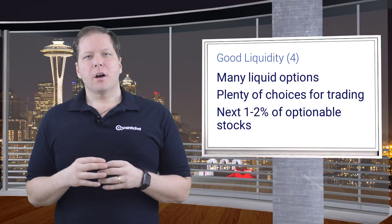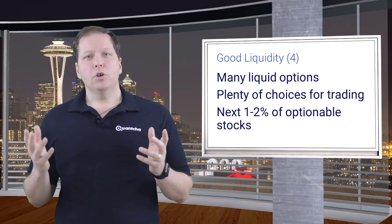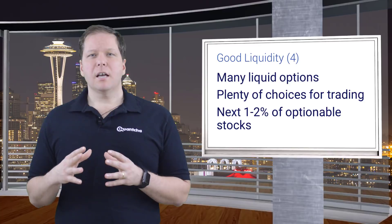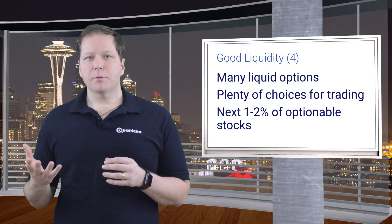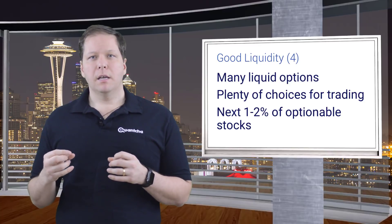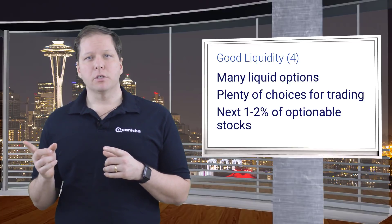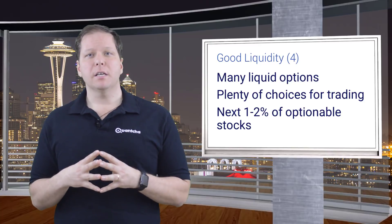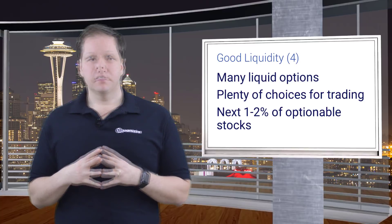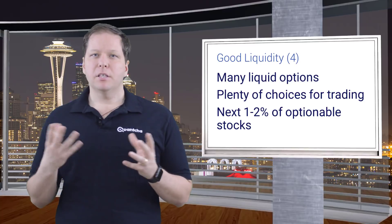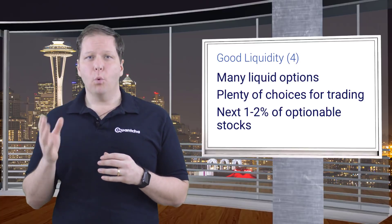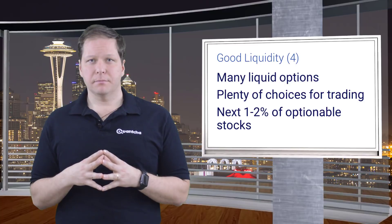Our next tier covers stocks with good option liquidity. These stocks have plenty of options available, and their key options will generally have good liquidity themselves. This rating typically contains the next 1 to 2% of optionable stocks.